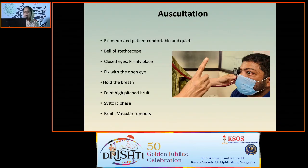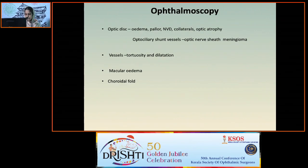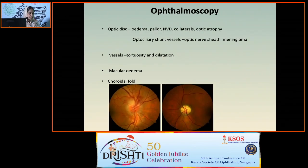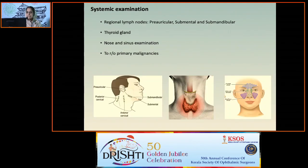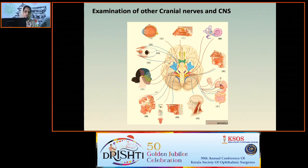Auscultate the eyeball: with both examiner and patient comfortable in a quiet room, place the bell of the stethoscope firmly over the closed eyeball, ask the patient to fix with the other eye, hold breath — a high-pitched bruit in the systolic phase is usually seen in vascular lesions causing proptosis. Ophthalmoscopic examination is important for optic disc changes, vascular changes, macular edema, and choroidal folds. Systemic examination in proptosis should include regional lymph nodes, thyroid gland, nose, and paranasal sinuses. If suspecting orbital metastasis, examine for primary malignancy. In neuro-ophthalmological cases, central nervous system examination and assessment of all cranial nerves is essential.